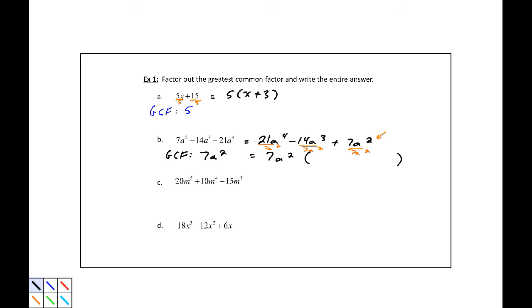So 21a to the fourth divided by 7a squared would be 3a squared. Negative 14a cubed divided by 7a squared would be minus 2a. And 7a squared divided by 7a squared is 1, so plus 1. So my answer is 7a squared, parentheses, 3a squared minus 2a plus 1, close parentheses.